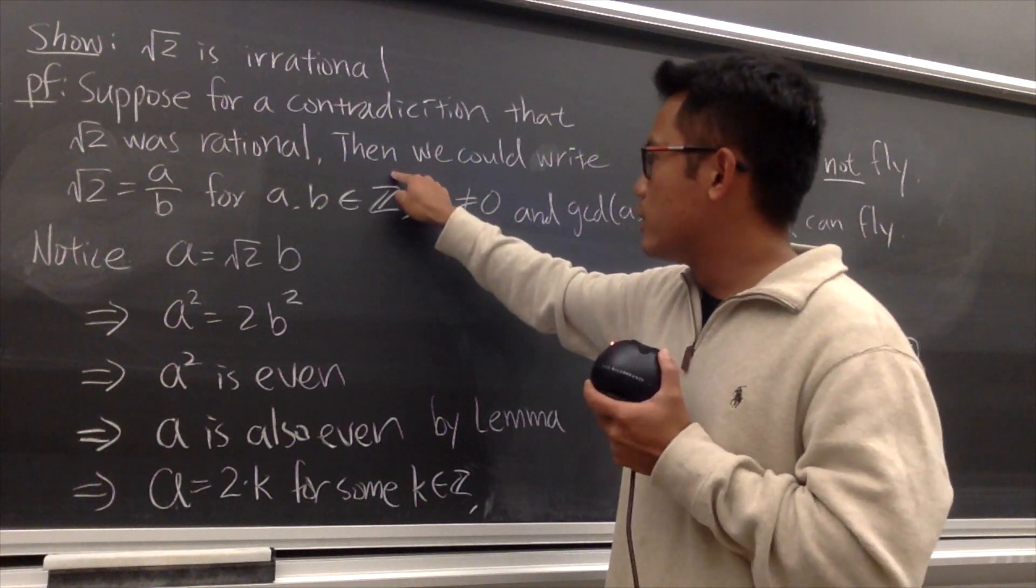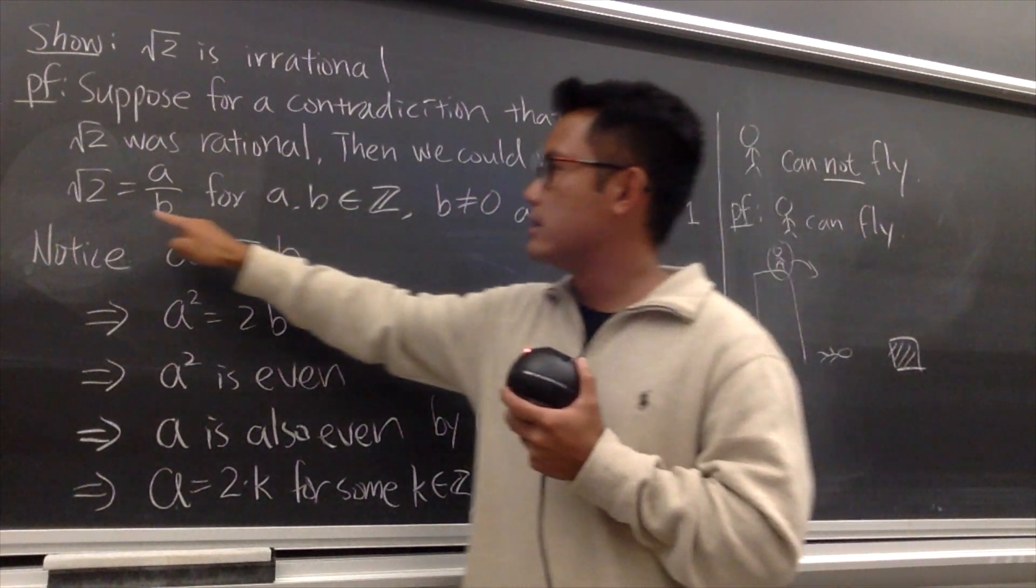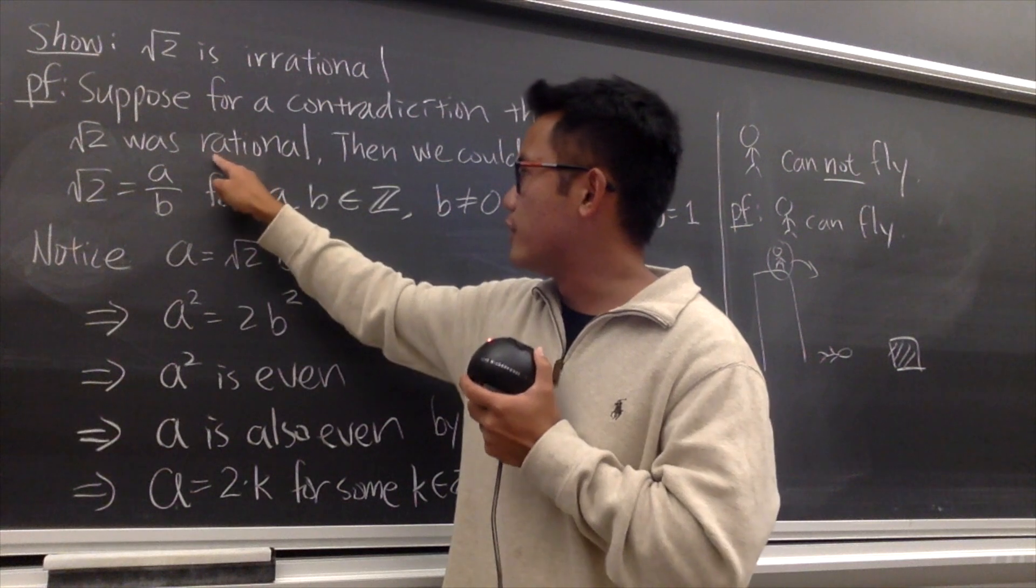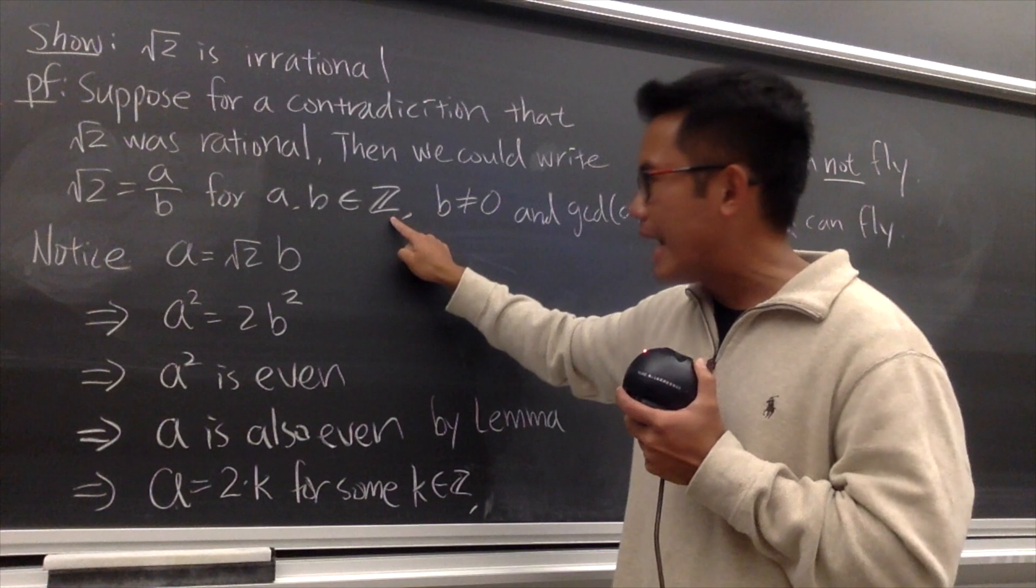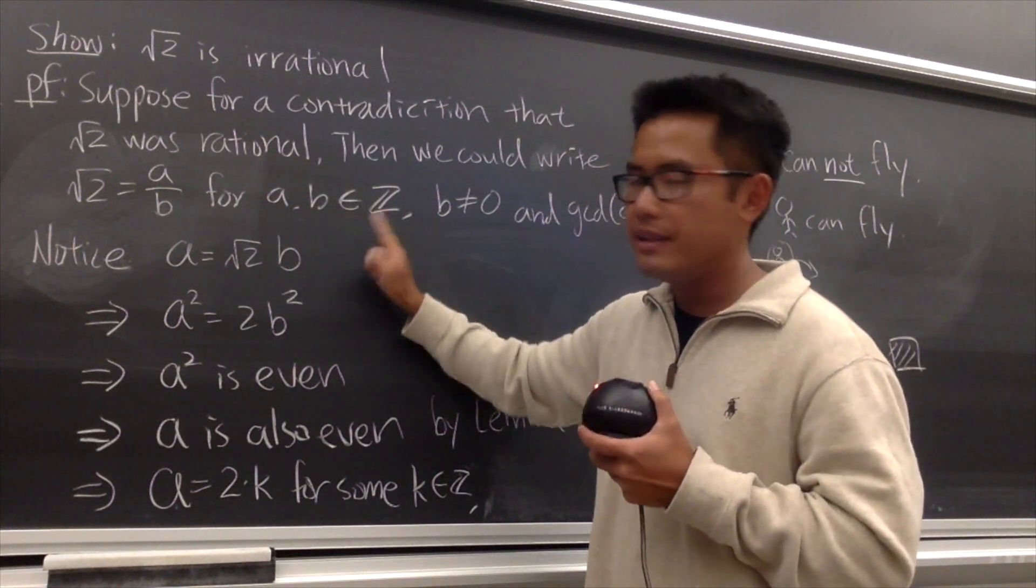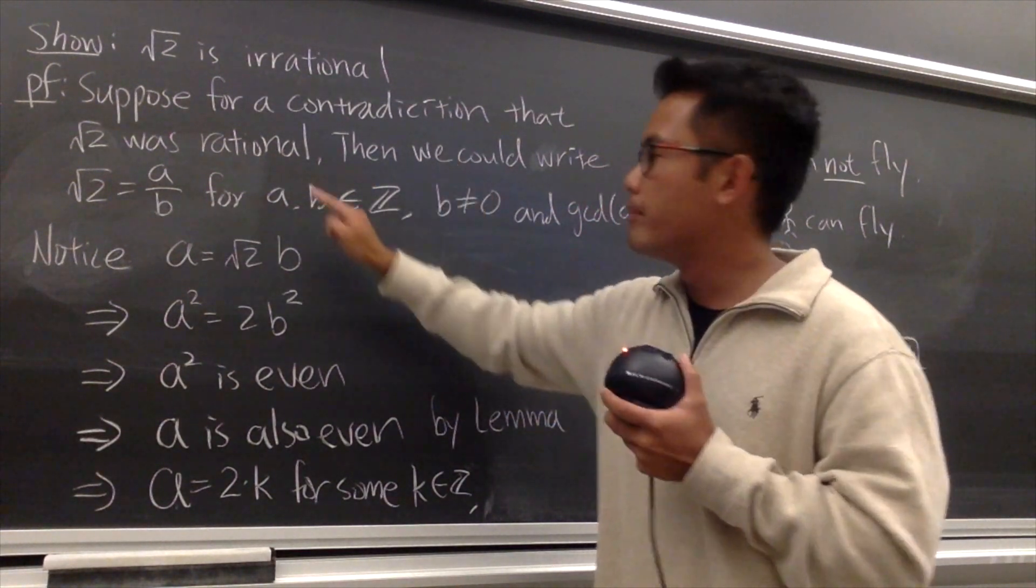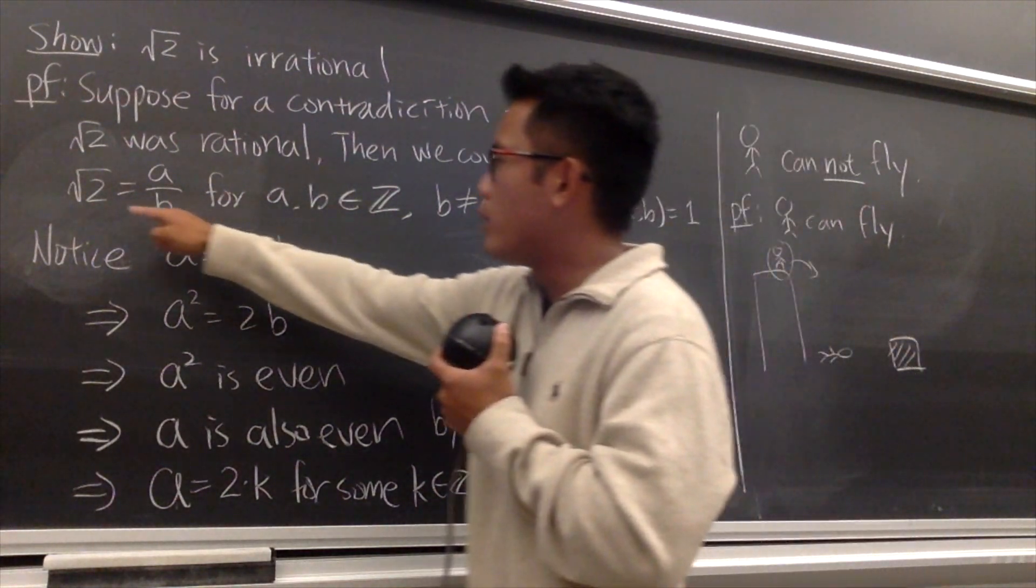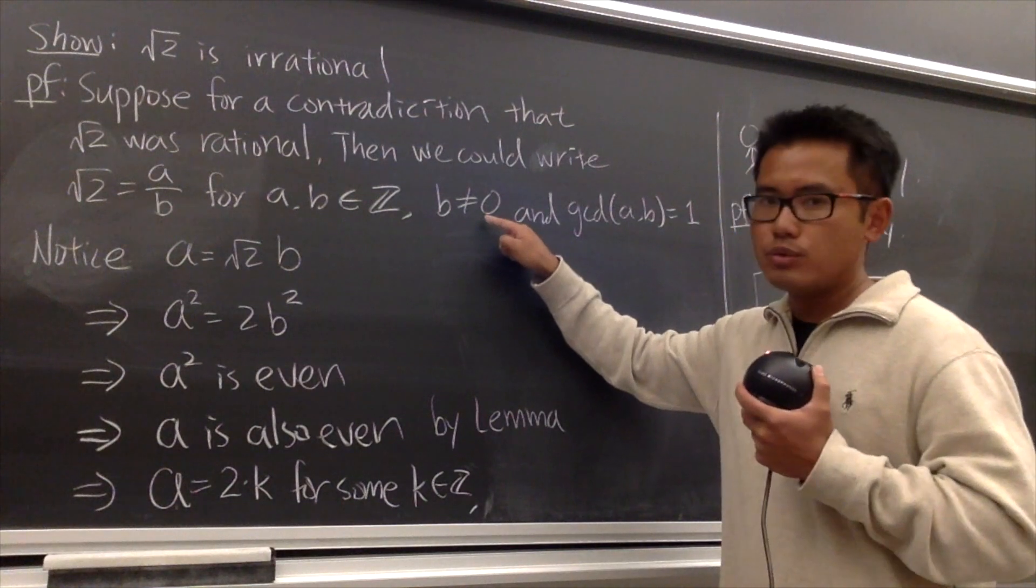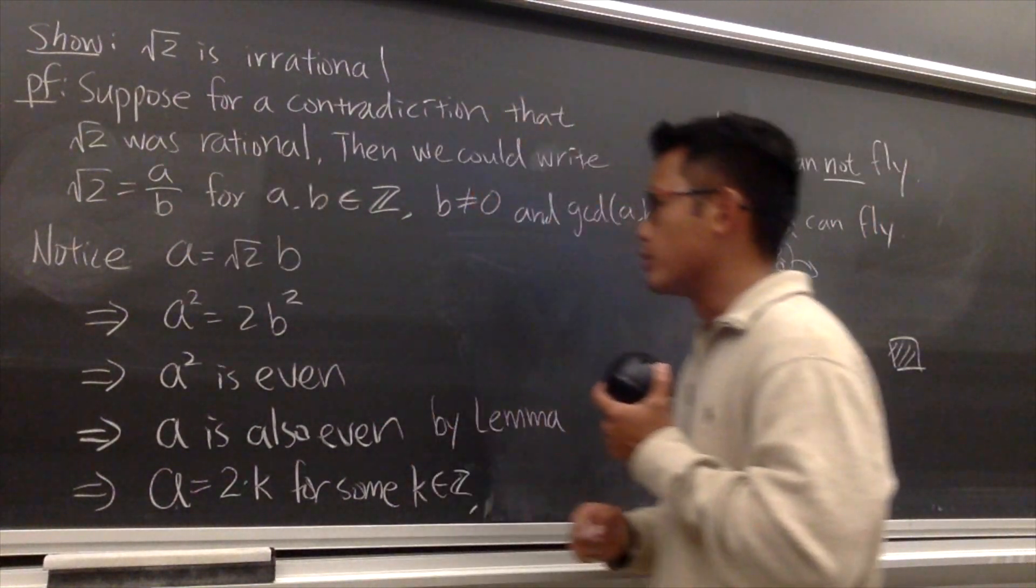Well, in that case, we can write it as a over b, because that's the definition of a rational number. a over b, where a and b are in Z, meaning that a and b are integers. And because we wrote square root of 2 as a over b, b cannot be 0, otherwise you are dividing by 0.